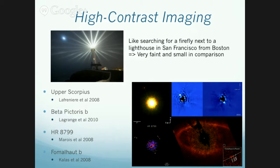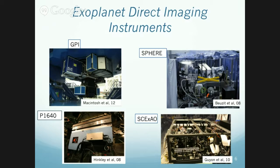These are the instruments coming online right now. Two facility instruments: the Gemini Planet Imager at Gemini, just across the street from LSST, and then SPHERE at Paranal, still in Chile but a little further north. Those are facility instruments coming online this year, and then a couple of others.